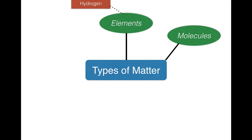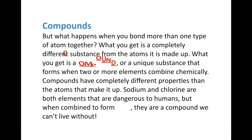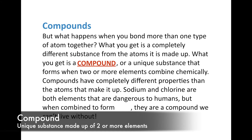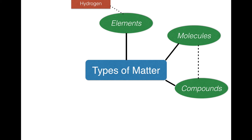There's a particular type of molecule that we're going to consider separate because it's a bit different — and it's compounds. What do you think happens when you bond together more than one type of atom? Well, what you get is a completely different substance from the atoms that it is made up of. What you get is what we call a compound. A compound is a unique substance that forms when two or more elements combine chemically. So instead of two carbon atoms, you might have two hydrogen atoms and one oxygen atom — those combine to form water. Compounds have completely different properties than the atoms that make them up.